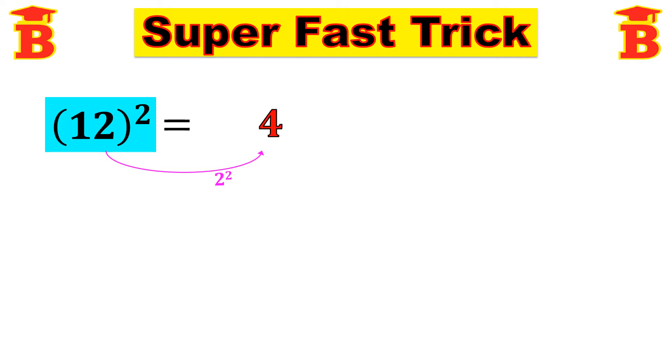Next take the given number 12 and add with the last digit, i.e. 12 plus 2. 12 plus 2 is 14. So the answer is 144. 12 square is 144.